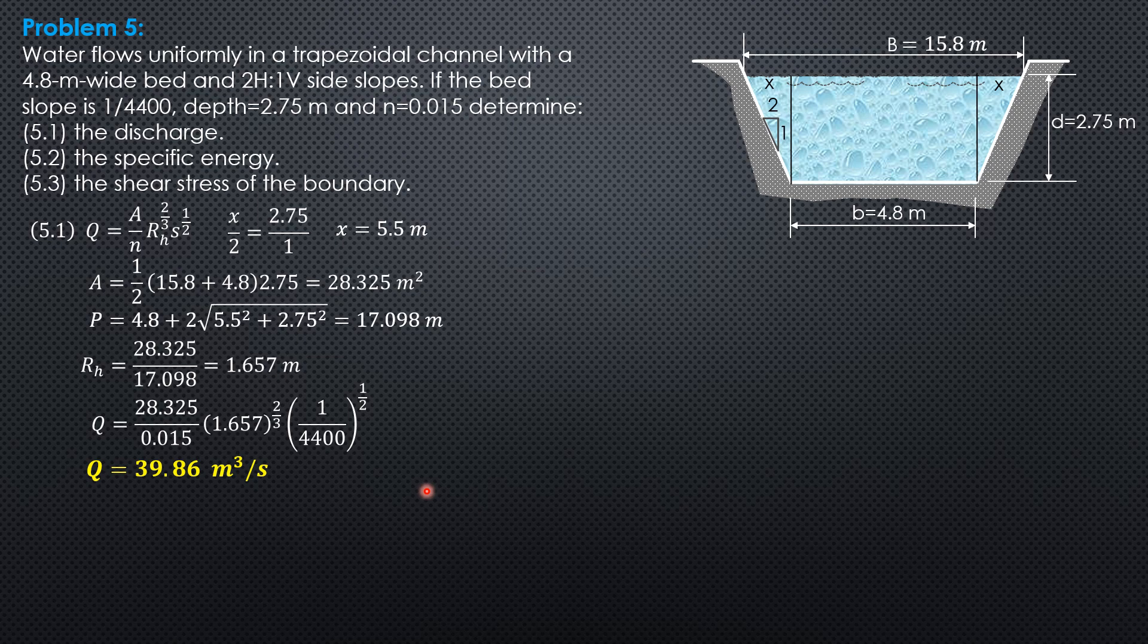The specific energy is velocity head plus depth. Where the mean velocity of flow is discharge over area. The discharge is 39.86, area 28.325, so 1.407 meters per second.